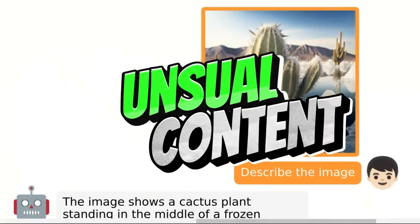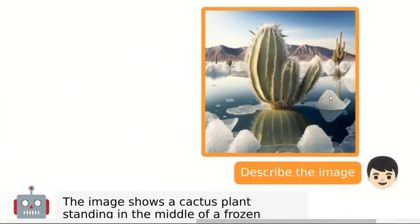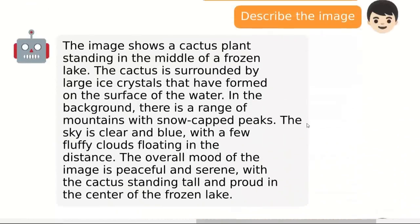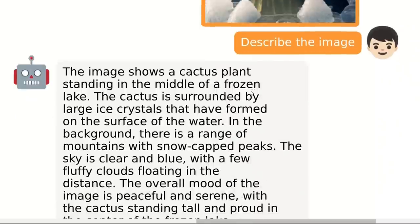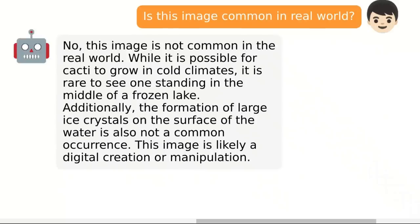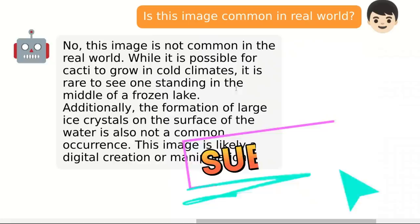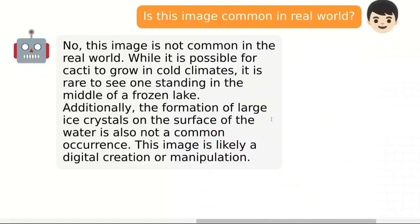It can even identify unusual content in images. Here we have a cactus in the middle of a frozen lake with ice sheets on it. We ask it to describe the image: 'The image shows a cactus plant standing in the middle of a frozen lake. The cactus is surrounded by large ice crystals that have formed on the surface of the water.' Then we ask if the image is common in the real world. It says: 'No. This image is not common in the real world. While it is possible for cacti to grow in cold climates, it is rare to see one standing in the middle of a frozen lake. Additionally, the formation of large ice crystals on the surface of the water is also not a common occurrence. This image is likely a digital creation or manipulation.' It's actually able to understand that these are unusual things in the image.